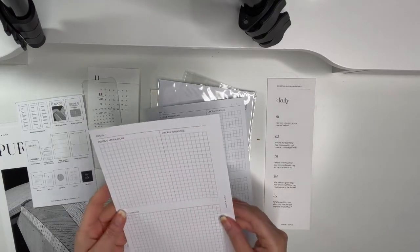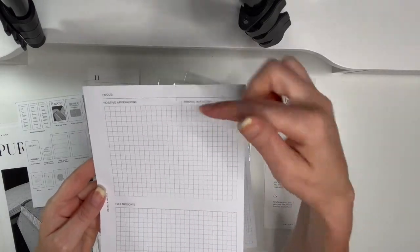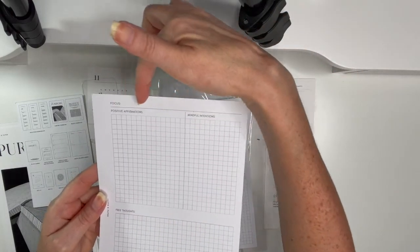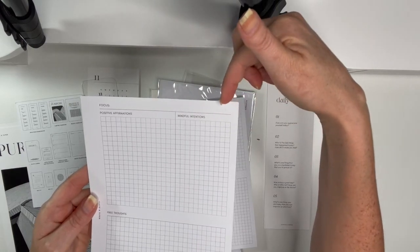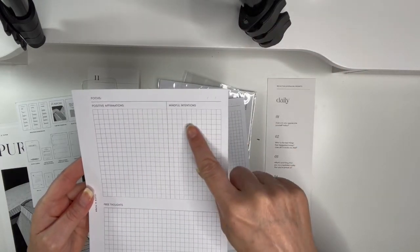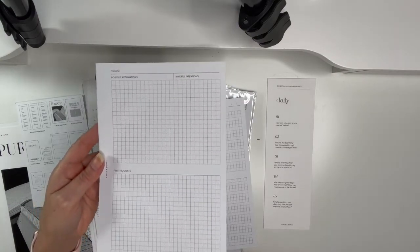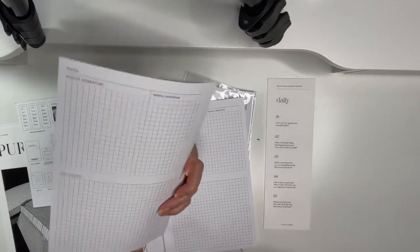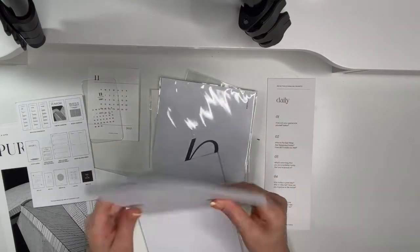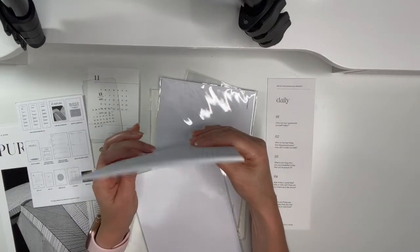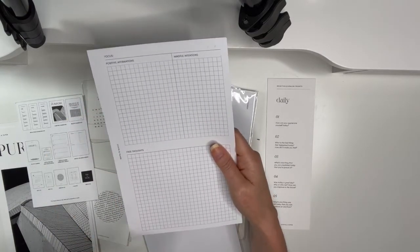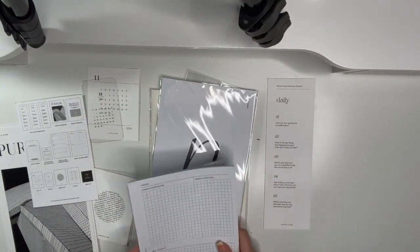Oh, there's a lot in here. That's cool. Okay, I think the same on the back. Yep. So basically this is cool. You put what your focus is, put the date here if you want, positive affirmation, mindful intentions, and just free thoughts. That's neat. These are really cool. Like this is a really cool idea and I love that they're grid. I love that.